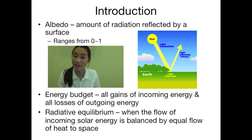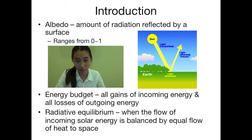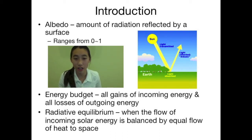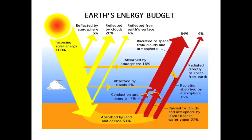The little diagram at the side shows how albedo works. Next, we have energy budget — this is all the gains of incoming energy and all the losses of outgoing energy. The third term is radiative equilibrium, which is when the flow of incoming energy is balanced by the equal flow of heat to space. There is also a diagram which shows the Earth's energy budget and how incoming solar energy goes through different processes and flows.